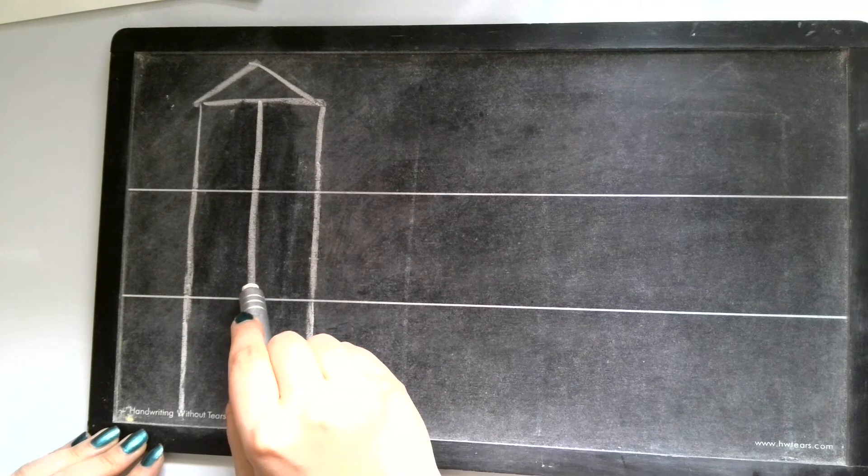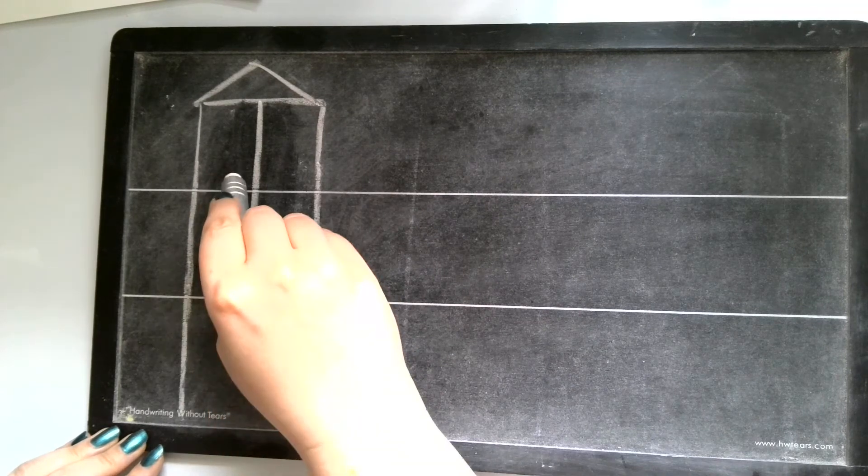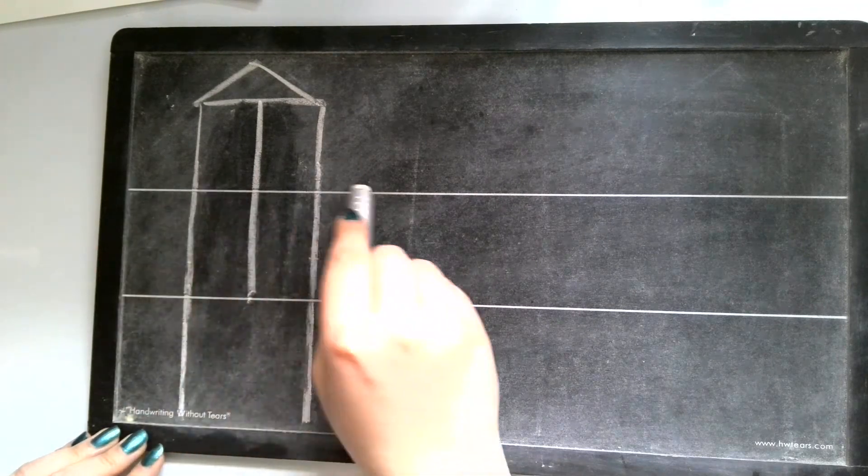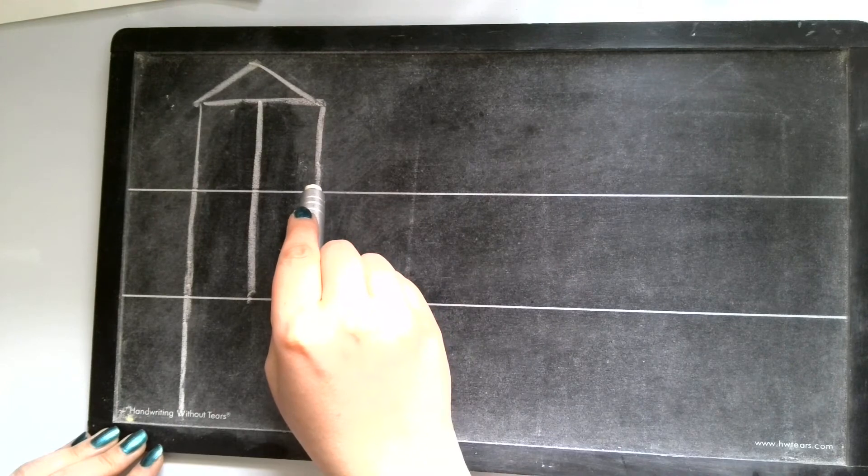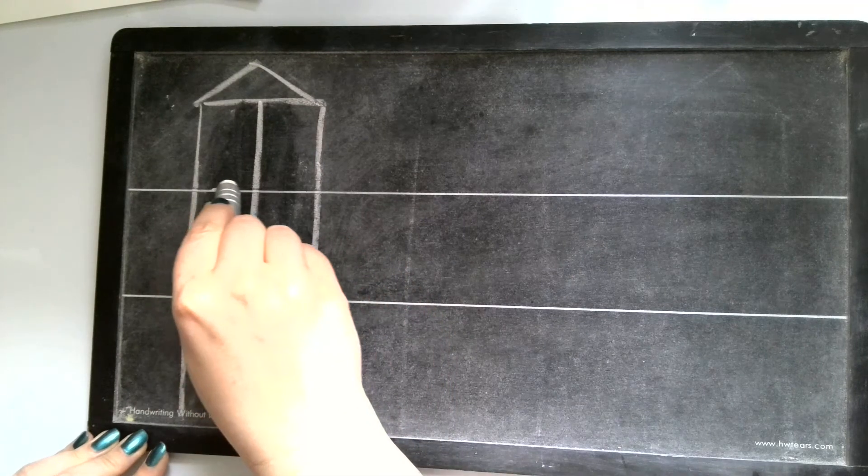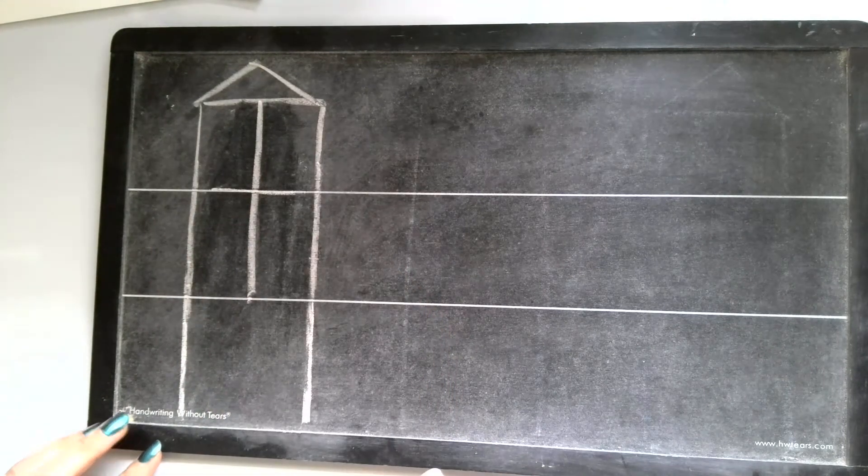Once we get to the bottom of our line, we're going to jump to the middle between the lower and the upper part of the house and we're going to draw a line across, just like if we were drawing a line across the floor.